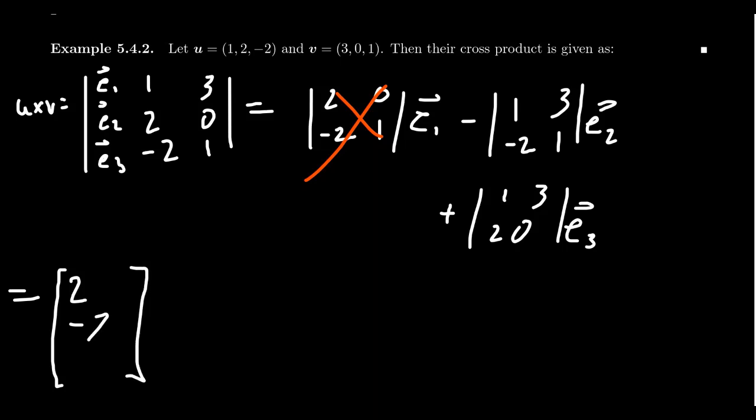And then for the last one, you take (1)(0) - (3)(2), which gives you -6, which we'll record right here. So that gives us our cross product there: (2, -7, -6).